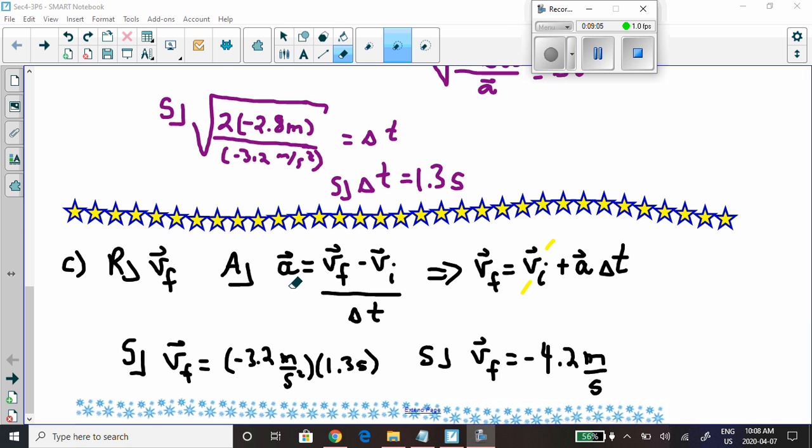Well, we just used the acceleration, negative 3.2 meters per second squared. We calculated time from before, 1.3 seconds. And we know the initial velocity was zero. So what I can do is take this equation and rearrange it into this one right here. We've done this many times in class when we were together. I've rearranged the equation. There you have it.